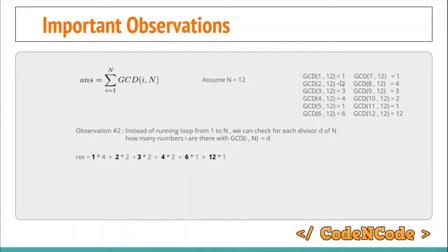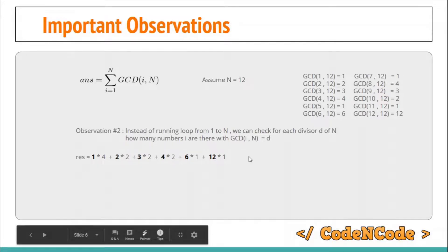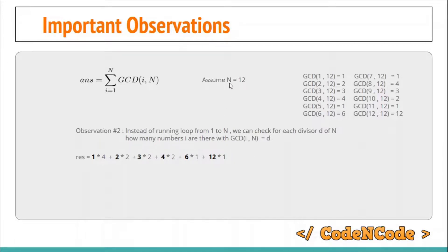We grouped numbers based on their GCD result: four numbers evaluate to 1, two evaluate to 2, two evaluate to 3, and so on for 4, 6, and 12 — all of which are divisors of n. If we can efficiently get the count for each group, then the overall expression can be evaluated in O(sqrt(N)) time, since we can find all divisors of n in O(sqrt(N)).